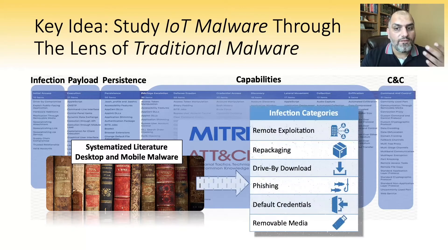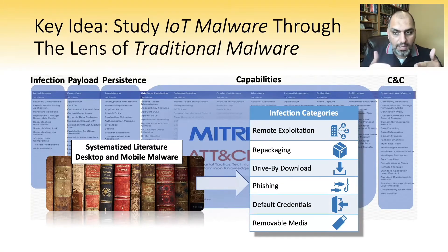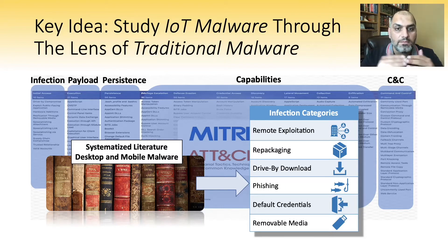So for example, we use the infection category to derive subcategories from prior literature and see how that applies to IoT malware. The infection category has six subcategories describing various infection methods.